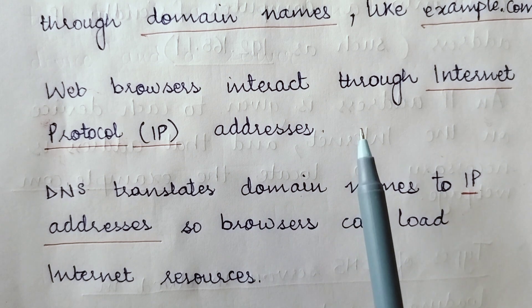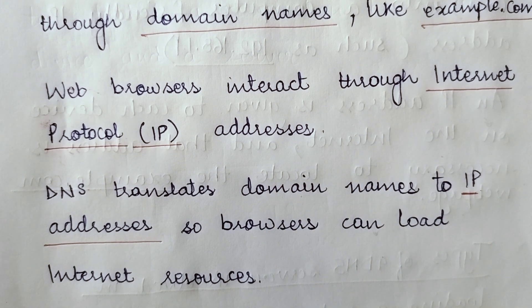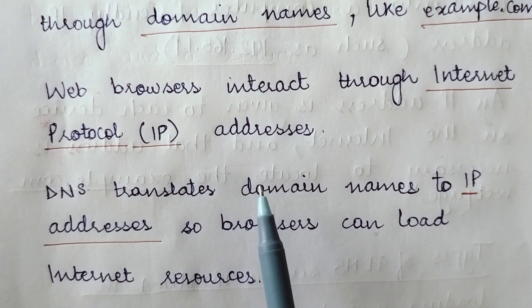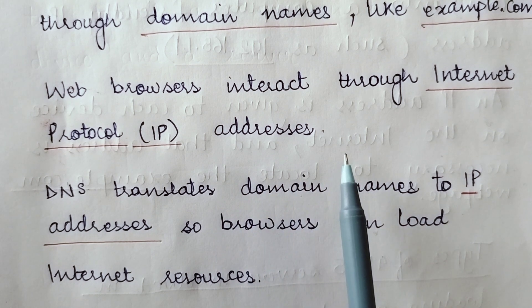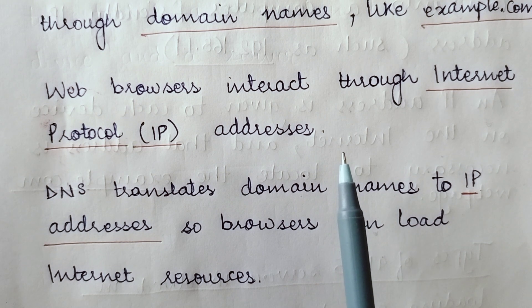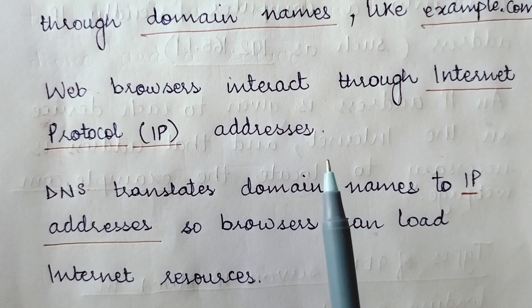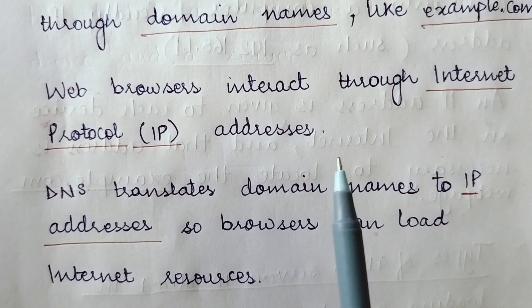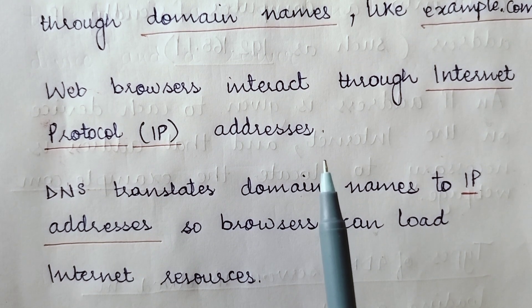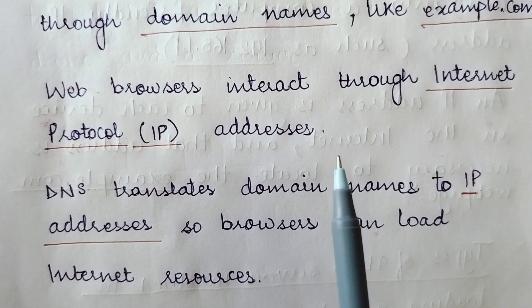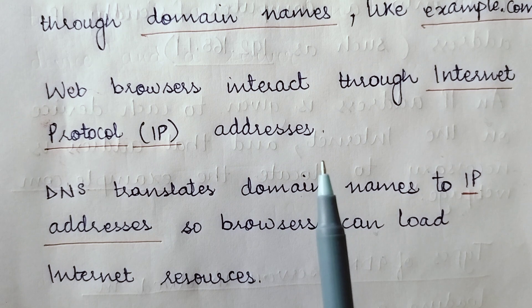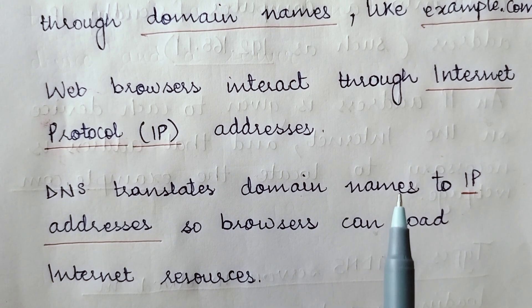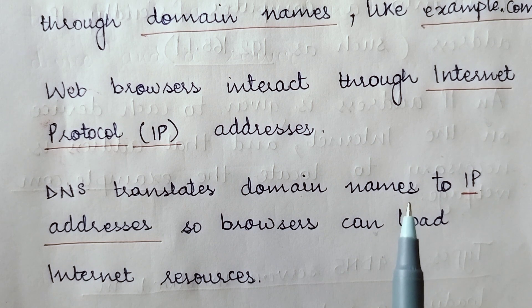Web browsers interact through internet protocol addresses. When web browsers are interacting with web servers, they interact through IP addresses. IP addresses are the logical addresses which uniquely identify a device among other devices on a network — just like your Aadhaar card number uniquely identifies every individual from among others. Similarly, the IP address is unique for all hosts and uniquely identifies each host among several hosts.